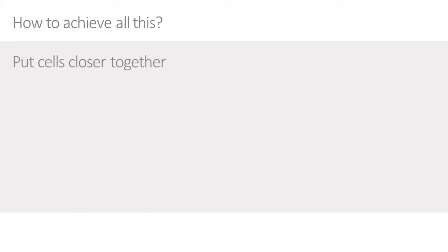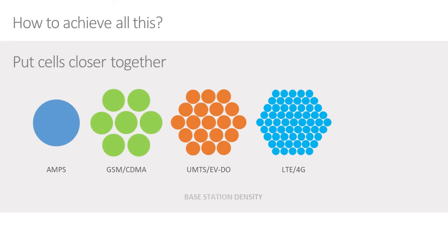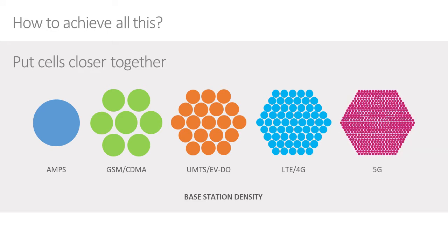So how do we make all that happen, particularly the higher density of connections? One way is to increase the number of base stations. Looking across history, we started with analog mobile phone systems, then went digital with GSM in Europe and CDMA in America. Then everybody aligned around 3G UMTS — Universal Mobile Telephone System — which evolved into LTE 4G, and now increasing the density further, going to 5G.